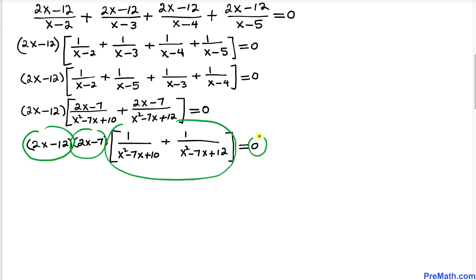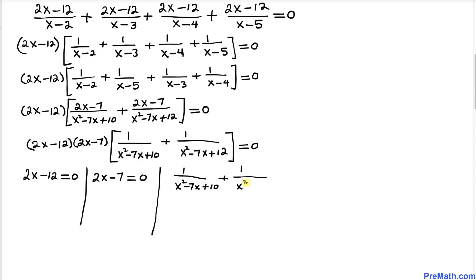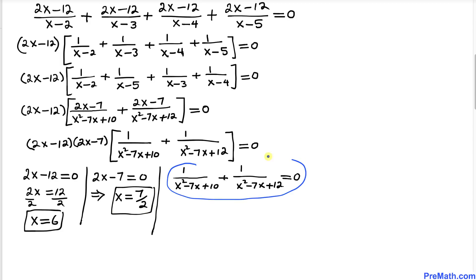We now have three factors equal to 0, so we split them: 2x minus 12 equals 0, giving x equals 6; and 2x minus 7 equals 0, giving x equals 7 over 2. The third factor is 1 over (x squared minus 7x plus 10) plus 1 over (x squared minus 7x plus 12) equals 0.